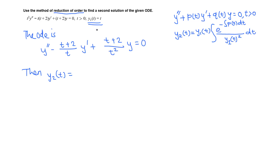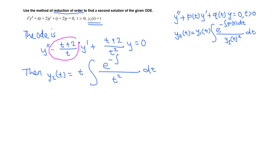Then the second solution y2 is given by the first solution, which is t, times this integral. On the bottom, the first solution squared is t². On the top, e raised to the negative integral of p(t)dt — in this case p(t) is negative (t+2)/t, and the two negatives cancel, so we just need the integral of (t+2)/t dt.